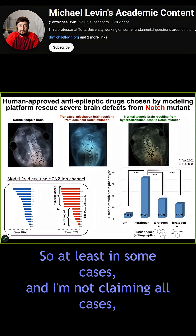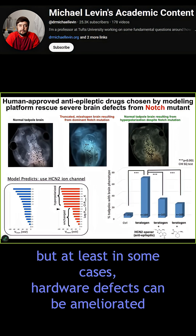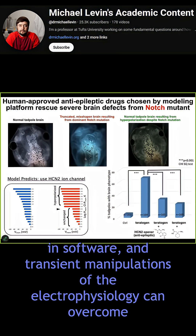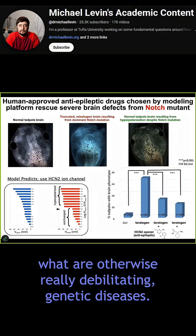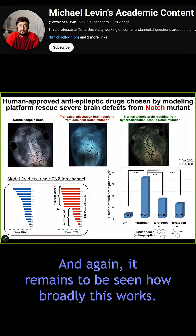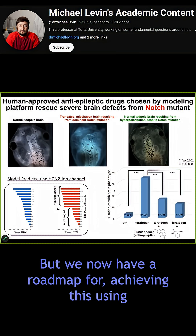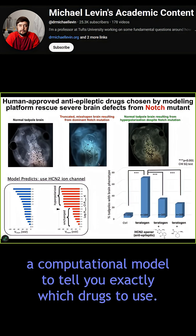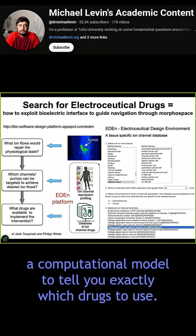So at least in some cases — and I'm not claiming all cases, but at least in some cases — hardware defects can be ameliorated in software. Transient manipulations of the electrophysiology can overcome what are otherwise really debilitating genetic diseases. It remains to be seen how broadly this works, but we now have a roadmap for achieving this, using a computational model to tell you exactly which drugs to use.